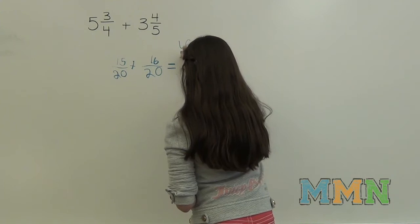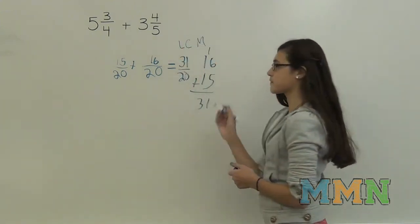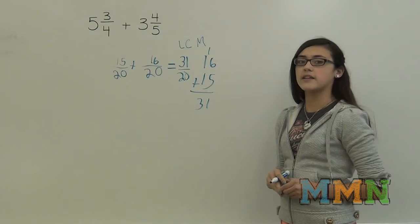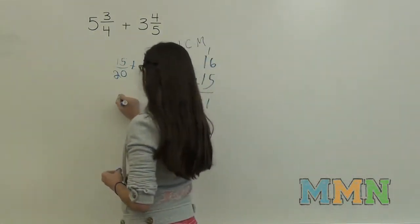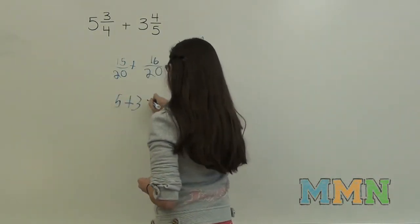So you'd have 31 twentieths. And then we'll have to add the whole numbers. 5 and 3, which is 8.